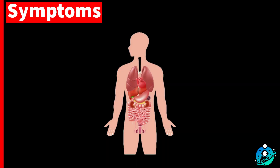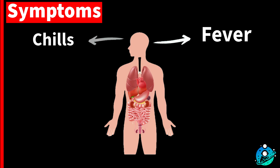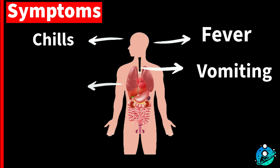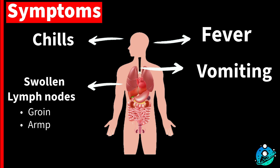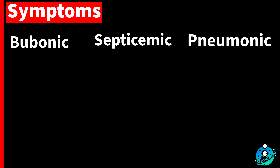The Black Death struck with terrifying speed and lethality. Victims experienced fever, chills, vomiting, and the appearance of painful buboes — swollen lymph nodes — typically in the groin, armpits, or neck. The disease came in three forms: bubonic, septicemic, and pneumonic.